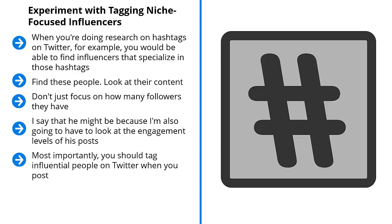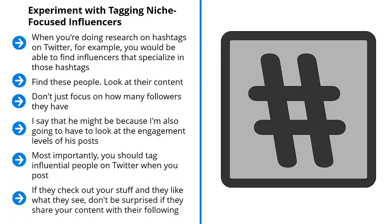Most importantly, you should tag influential people on Twitter when you post. Use your most powerful hashtags and mention them in your post. This can help you get on their radar — they'll be put on notice that you're also sharing content similar to what they're interested in. If they check out your stuff and like what they see, don't be surprised if they share your content with their following. Engage with them and let them know about your questions or suggestions.